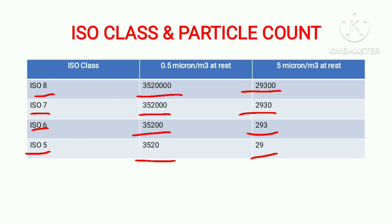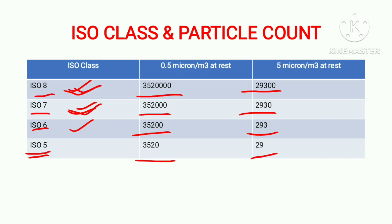In the pharma industry, mostly three ISO classes are used: ISO 8, ISO 7, and ISO 6. ISO 5 is mostly not used in pharma. ISO 8 is used in general production areas like granulation, blending, and QC. ISO 7 is used in microbiology and sterile areas, and some companies also use ISO 6 in microbiology and sterile areas instead of ISO 7.